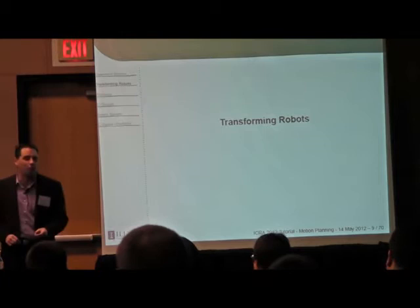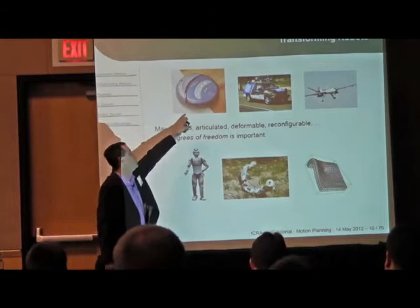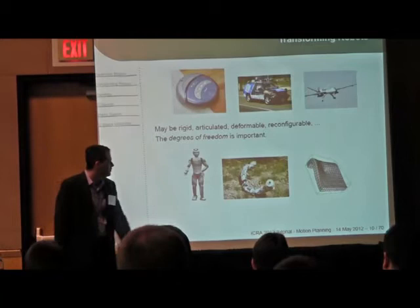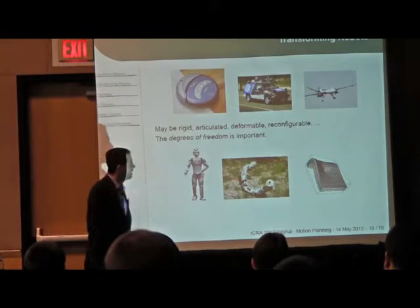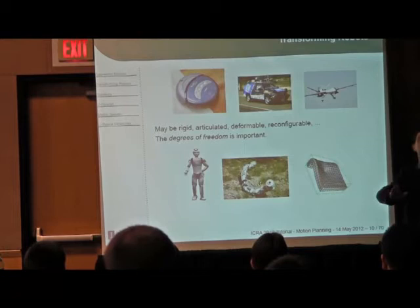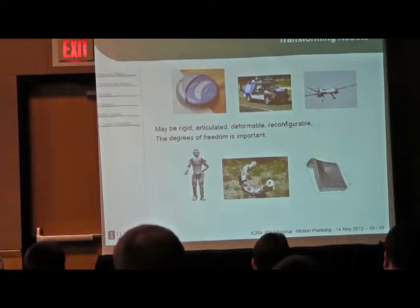We all like transforming robots — robots that don't move are kind of boring. Transformation is one of the first things we think about. Maybe we have rigid bodies that roll in the plane, or flying rigid vehicles, or we might have articulated bodies like the Aldebaran humanoid, snake robots, or deformable bodies. There's a lot of interest especially in medical research — for example, steering needles through flexible material. Motion planning has been applied to those problems as well. So we want to transform robots and have representations of that.